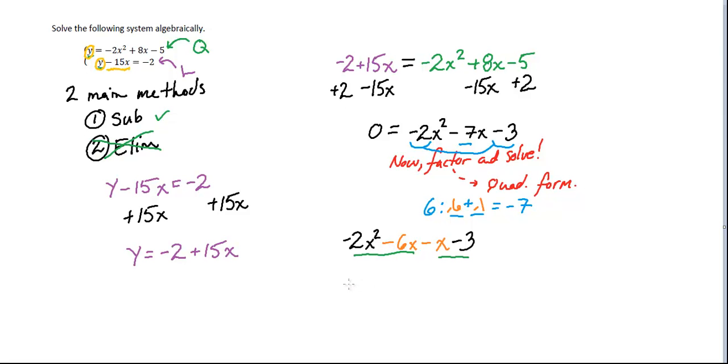And what I have left there is x plus 3. And then here I've got a minus 1. And when I take that out, I've got x plus 3. So my final factorization is negative 2x minus 1, x plus 3.